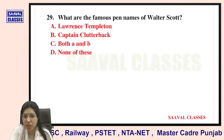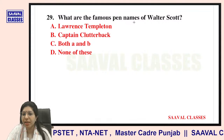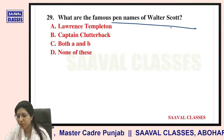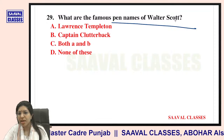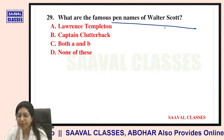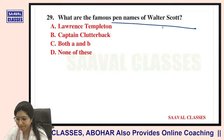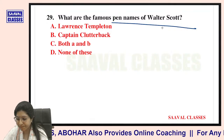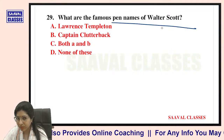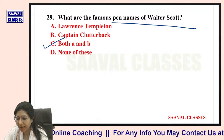Question number twenty-nine: What are the famous pen names of Walter Scott? Options are Lawrence Templeton, Captain Clutterbuck, both A and B, or none of these. They are both — Lawrence Templeton and Captain Clutterbuck.